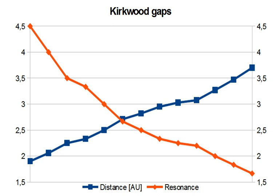The most prominent Kirkwood gaps are located at mean orbital radii of 2.06 AU (4-to-1 resonance), 2.5 AU (3-to-1 resonance, home to the Alinda group of asteroids), 2.82 AU (5-to-2 resonance), 2.95 AU (7-to-3 resonance), and 3.27 AU (2-to-1 resonance, Hecuba Gap, home to the Griqua group of asteroids).